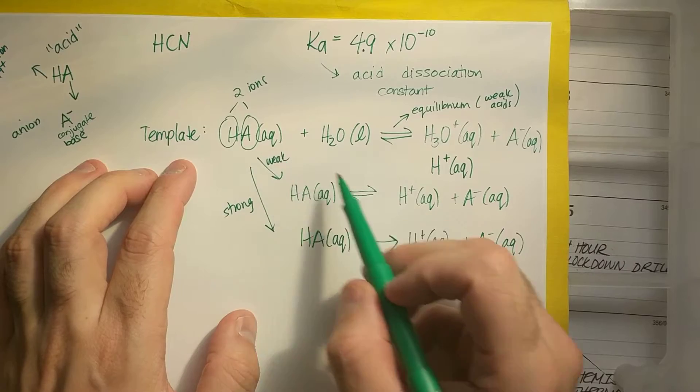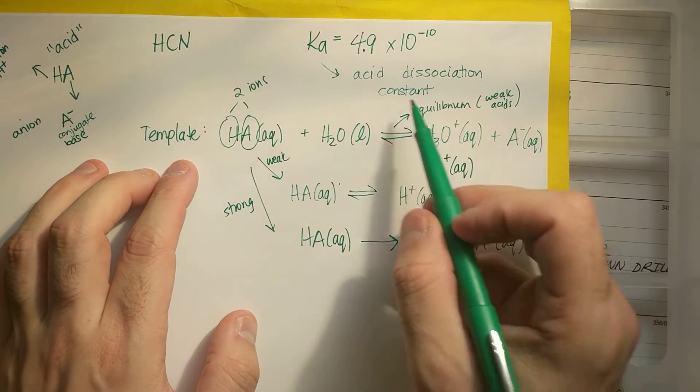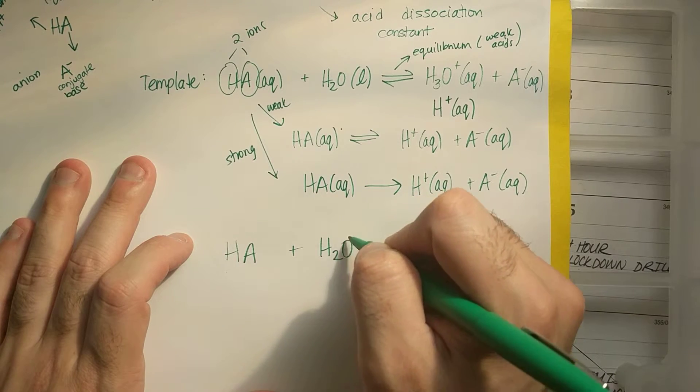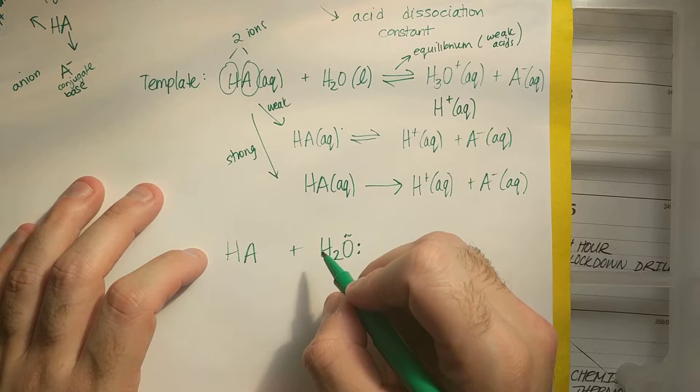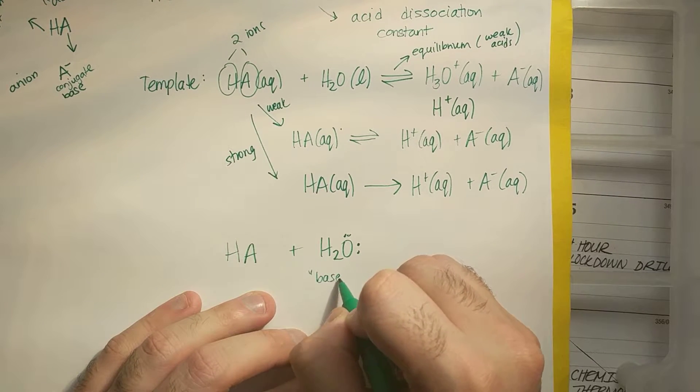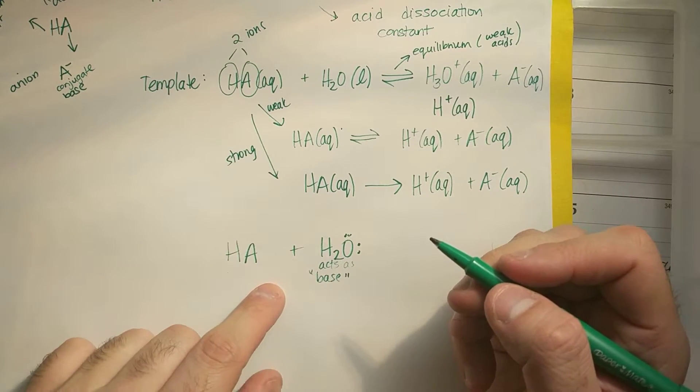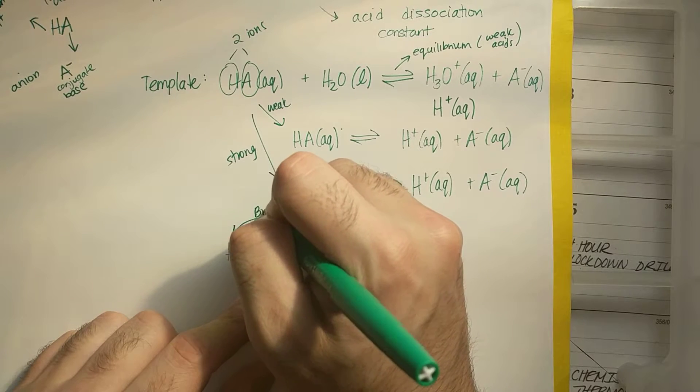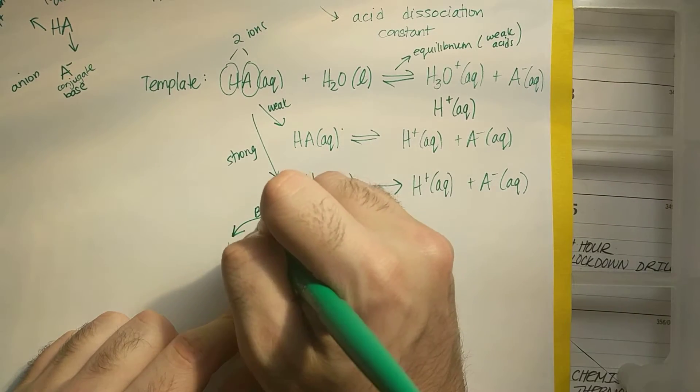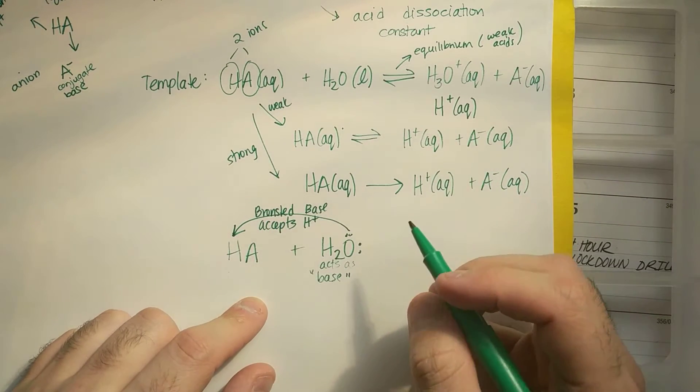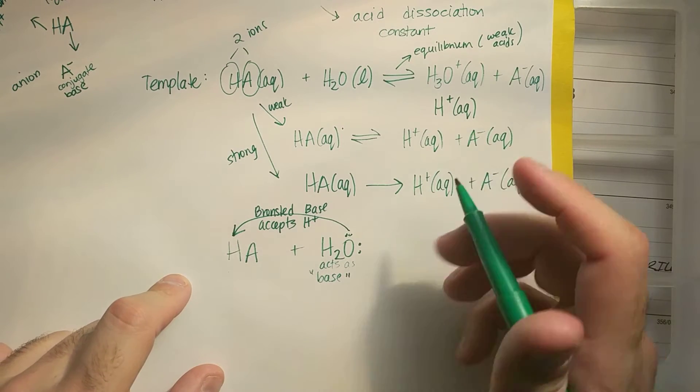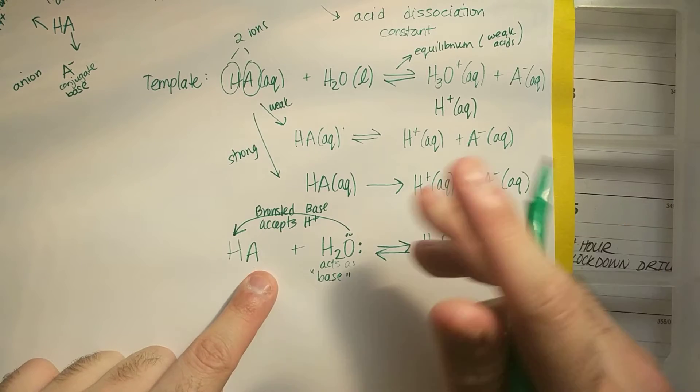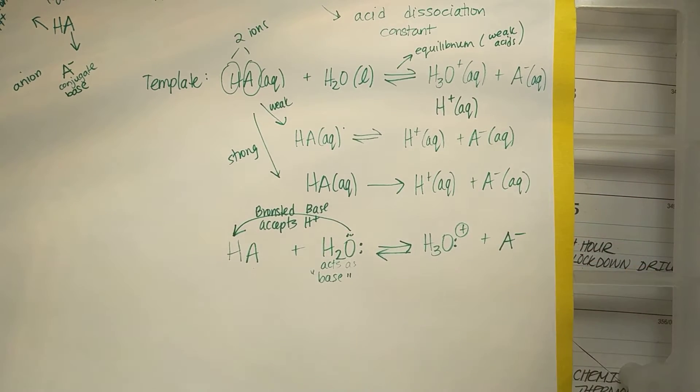So I broke apart that HA into H plus and A minus. Now why do I include this water business? Well, just to kind of show you where that H goes, if I had HA and I have water, water has these electrons. And we're going to talk about structures like way later, but water acts as a base here. And what it does is it pulls off that H plus. So this is acting as a Bronsted base where it accepts an H plus. So if I have H2O and I take H from it, I get H3O plus. And what's left over is the A that was hanging apart with this. That would be A minus.